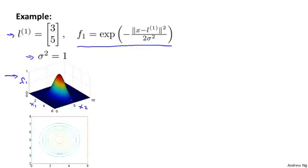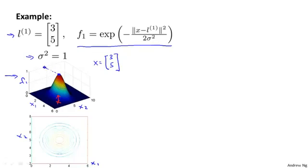Below is the same figure shown as a contour plot with x one on the horizontal axis and x two on the vertical axis. You notice that when x equals (3, 5) exactly, f one takes on the value of 1 because that's its maximum. As x moves further away, this feature takes on values close to zero. So f one measures how close x is to the first landmark, and it varies between 0 and 1 depending on how close x is to L1.